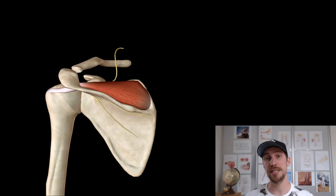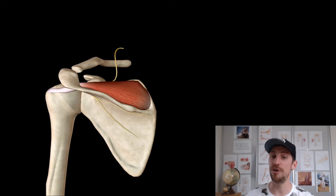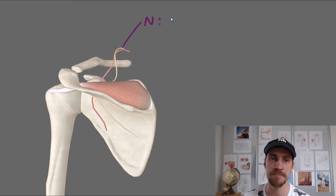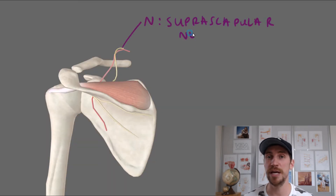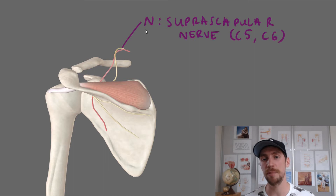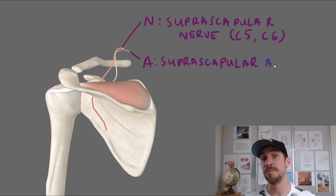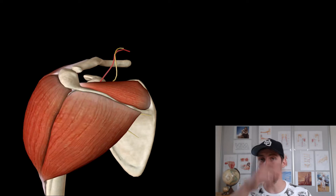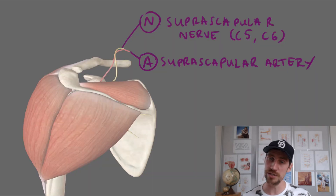The supraspinatus muscle is innervated by the suprascapular nerve — that's C5 and C6 nerve roots. The muscle is supplied by the suprascapular artery — that's the blood supply. Its main synergist is the deltoid muscle, in particular the middle fibers.